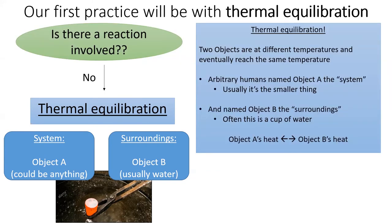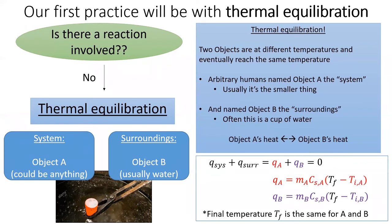We'll next practice a thermal equilibration problem. We'll take a hot piece of metal and drop it into some room temperature water. But before we jump in, I want to run through the important math. We'll start with the first law of thermodynamics. The change of the system plus the heat change of the surroundings will equal zero.